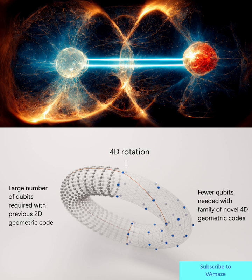The result of applying this new approach is visualized on the right side of the torus. Here, the sparse blue spheres show that dramatically fewer qubits are needed with this novel family of 4D geometric codes.